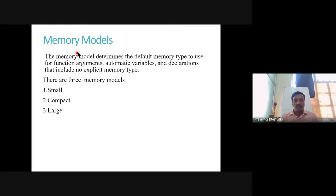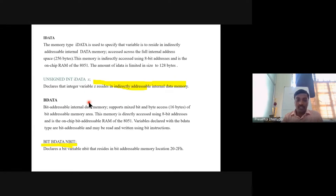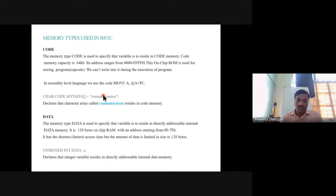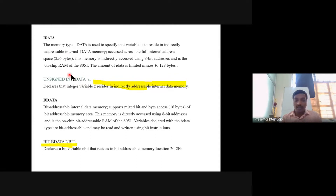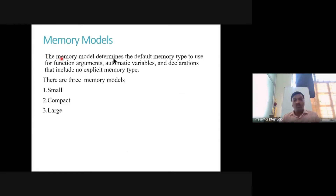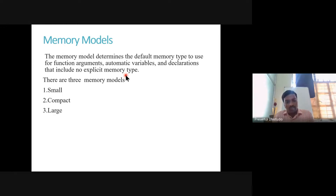Now let us understand memory models. So far we understood how to specify type of memory in embedded C using code, data, idata, bdata, xdata, and pdata. The memory model determines the default memory type to use for variables, function arguments, and function arguments that include no explicit memory type. In the last three classes when we were not writing memory type, the variables were declared in internal data memory. Memory models allow a default memory type when no explicit memory type is included. They are: small, compact, and large.